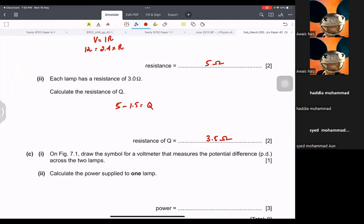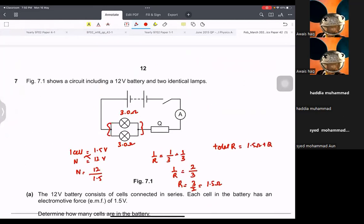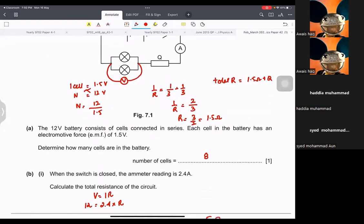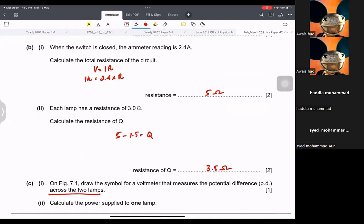Draw a voltmeter across two lamps. So it means we just need to draw a voltmeter connected in parallel with any lamps. So that would give you the voltage.